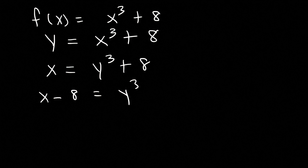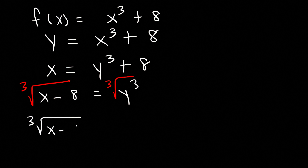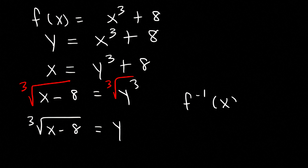So how can we solve for y in this example? We need to get rid of this 3 — we need to turn it into a 1. So what we can do is take the cube root of both sides. On the left, we have the cube root of x minus 8. On the right, the cube root of y to the third — the 3s will cancel, it's 3 divided by 3, you get 1, so it becomes just y. Therefore, the inverse function is the cube root of x minus 8. And that's the answer.